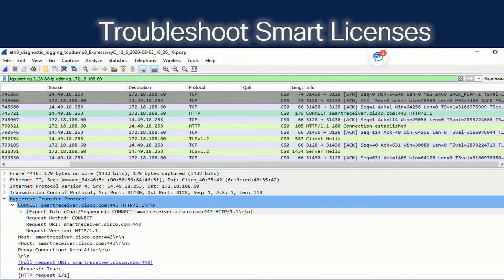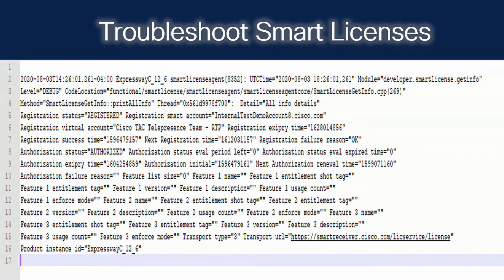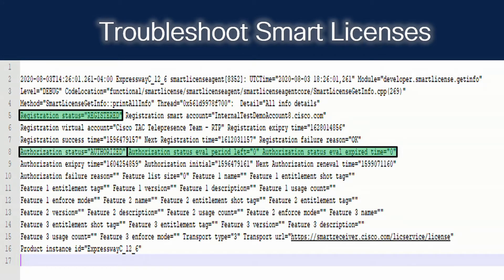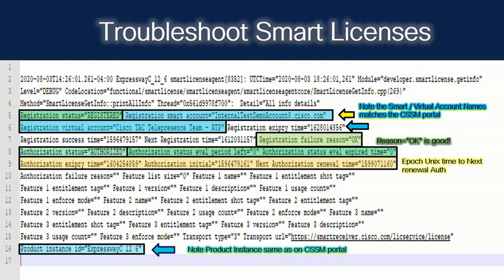Now that I've put in a correct token, we can see in our PCAP that we're getting connected to the smart receiver, we're getting a 200 OK established connection, and then registration can begin. Here's another snippet of a logging snapshot bundle — we can see the registration status is Registered, authorization status is Authorized along with the evaluation periods, registration smart account is internal-test-demo-account-a.cisco.com, registration virtual account is cisco.tac.telepresence.team.rtp, and we see our product instance ID. The registration failure reason is no longer an error, but OK, and we see our authorization periods in epoch Unix time that we can decode.